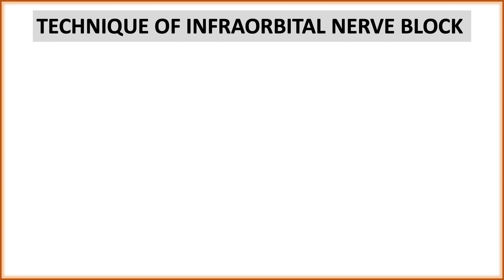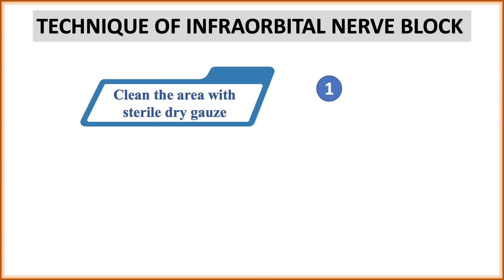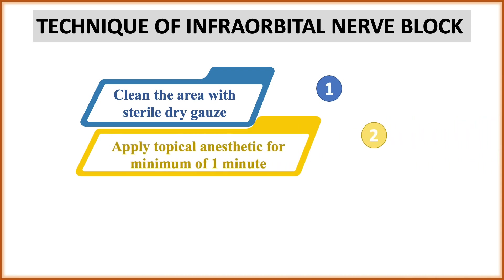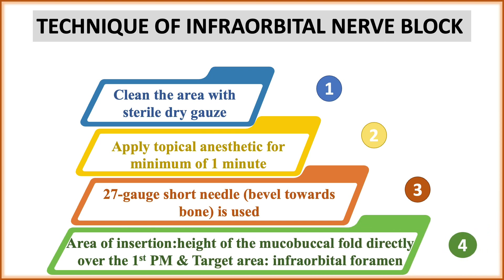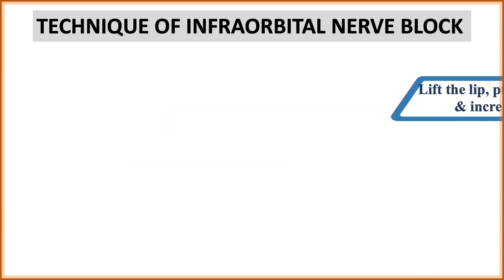The technique of infraorbital nerve block: first, clean the area with a sterile dry gauze. Then apply topical anesthetic for a minimum of one minute for painless insertion of the needle. Next, take a 27-gauge short needle and always direct the bevel towards the bone. The area of insertion is the height of the mucobuccal fold directly over the first premolar, and the target area is the infraorbital foramen, from where the nerve is coming.